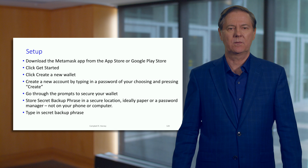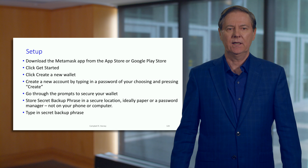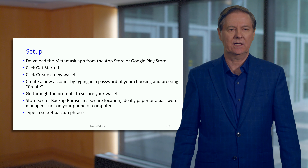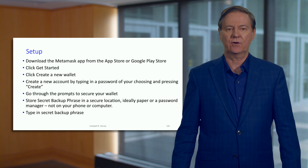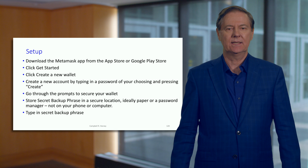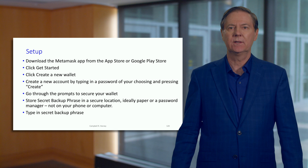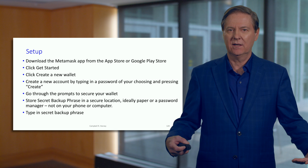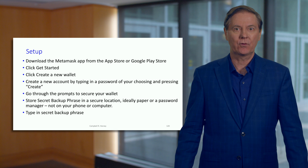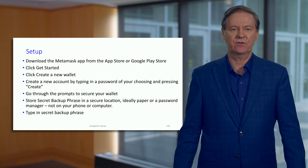The first thing: go to the App Store or the Google Play Store and download MetaMask. Click 'Get Started,' create a new wallet, and you're going to create a new account by putting in a password. You choose that. You don't actually have to give detailed information about yourself — it's not like establishing a bank account where you've got to give a lot of private information. This is very straightforward to do.